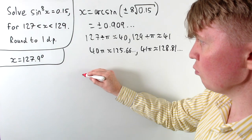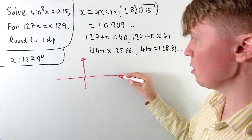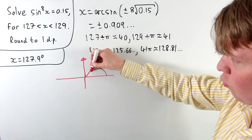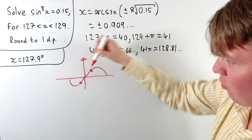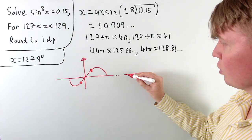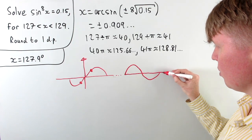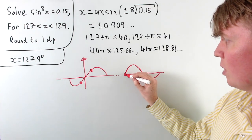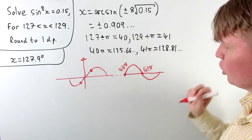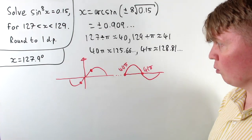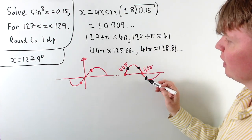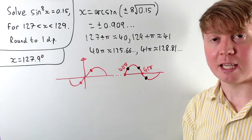We can get a sketch going, starting with the region around 0 to draw our initial two solutions: positive 0.909 and negative 0.909. Then we extend this all the way along to 40π and 41π. Since 40π is an even multiple of π, we can label 40π, 41π, 42π, and so on. We're interested in the solutions near these points — potentially two or three candidates within our target range.